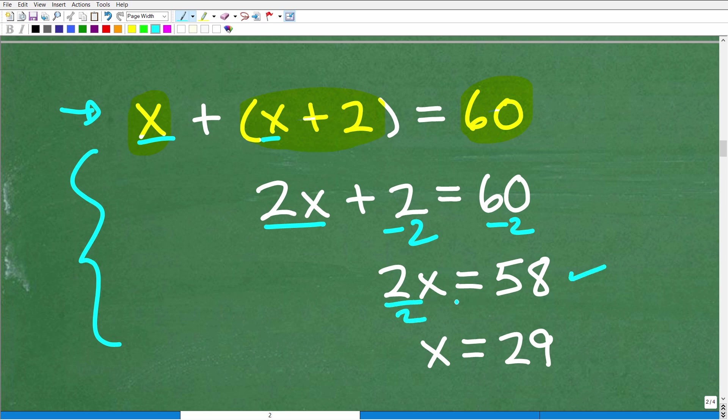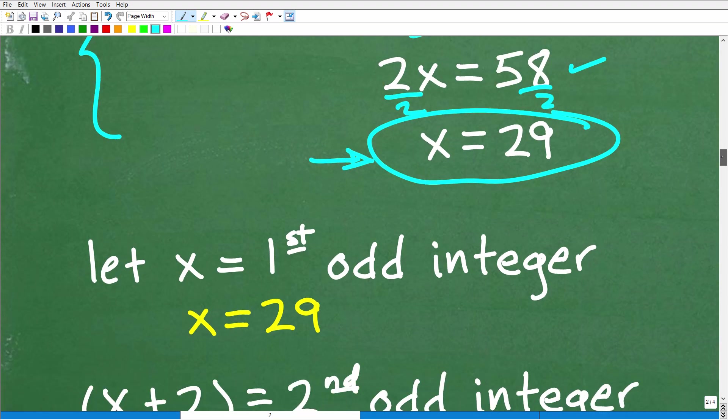So to solve for X, all I need to do is divide both sides of the equation by two, and you get X is equal to 29. So what does that mean, though?